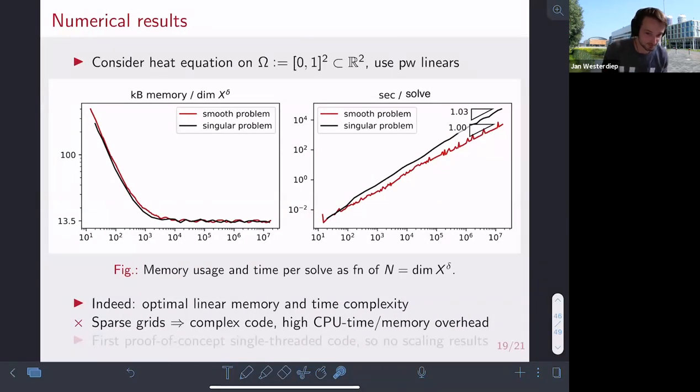So we built the first proof-of-concept implementation, and it shows that indeed we have a linear dependence on the number of degrees of freedom for a single solve step, and also linear memory. Although, because we are using these sparse grids, the code gets pretty complex. Therefore, the solve steps are not very fast yet, and the memory overhead is quite large. But these are, I think—at least this one, I think you should be able to fix by parallelism. This is just a proof-of-concept code. So we don't have any scaling results yet.